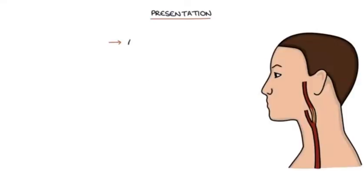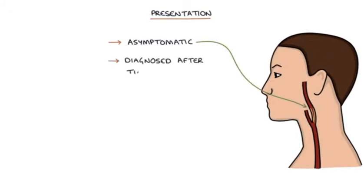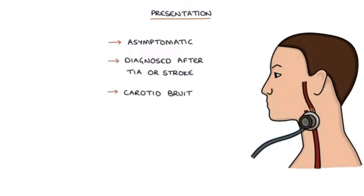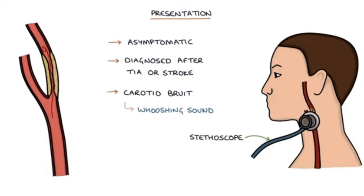Carotid artery stenosis is usually asymptomatic with no symptoms, and is typically diagnosed after a transient ischemic attack or a stroke. A carotid bruit may be heard on examination — this is a whooshing sound heard with a stethoscope over the affected carotid artery, caused by turbulent flow around the stenotic area during systole, during contraction of the heart.